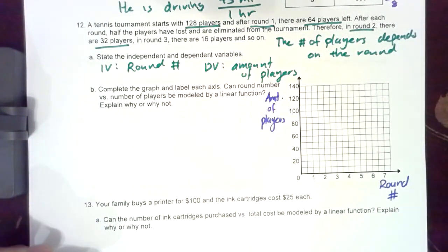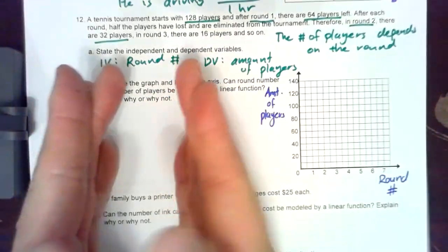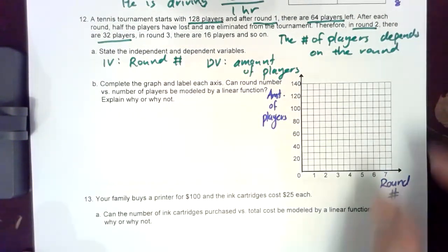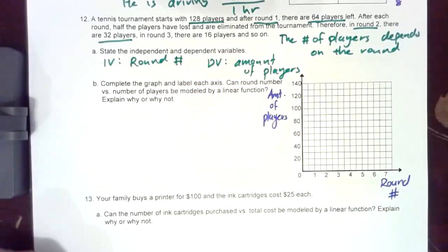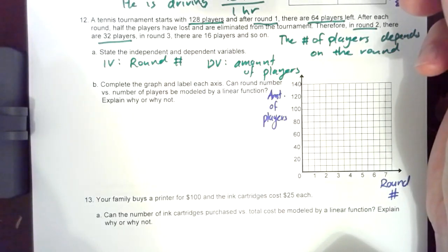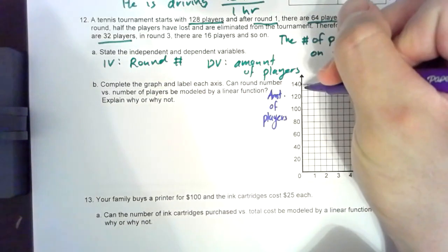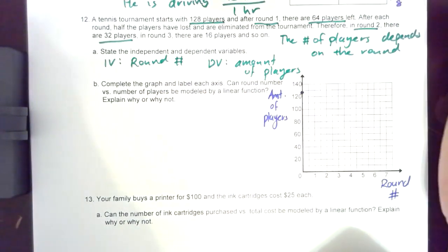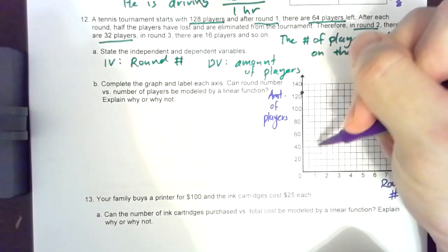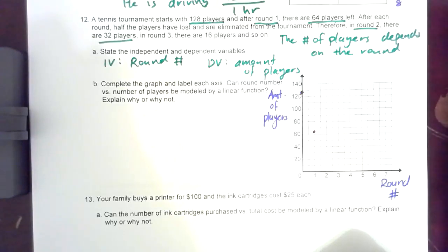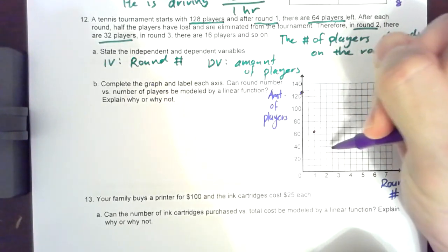So we can already tell that if you keep halving the amount of players every time, the first round will lose a significant amount of players because half the group will go away. So it starts with 128 players, at round zero or in the beginning of the tournament there are 128. In round one there are 64. Round two there should be 32.